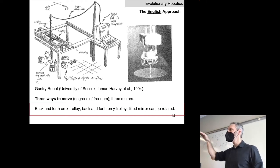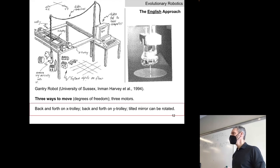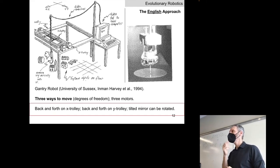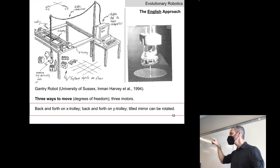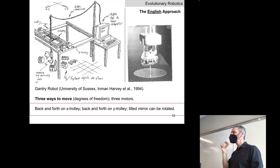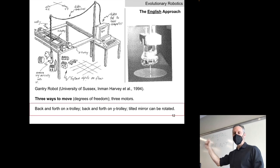On top of the X trolley is a smaller Y trolley — a second gantry that can drive vertically back and forth. The robot has two motors: one driving the X trolley and one driving the Y trolley. Down through the center of both trolleys they hung a camera upside down, pointing at a dental mirror set at 45 degrees. A third motor — not under neural network control — spins at constant velocity, rotating this dental mirror around and around continuously.